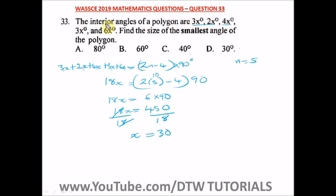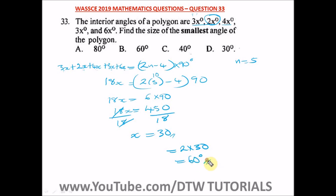Now we find each interior angle by substituting x = 30. The question asks for the smallest angle. Looking at the coefficients — 6 is the highest, followed by 4, then 3, and 2 is the smallest. So the smallest angle is 2x = 2 × 30 = 60 degrees.